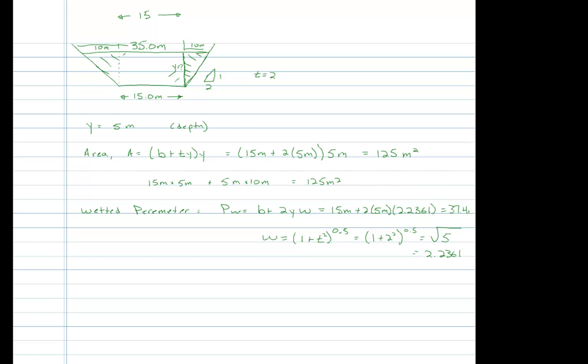Alright, hydraulic radius is defined as the area divided by the wetted perimeter. And for our purposes, 125 meters squared, wetted perimeter was 37.36 meters actually if we keep the precision there. So dividing those two, it is 3.346 meters.